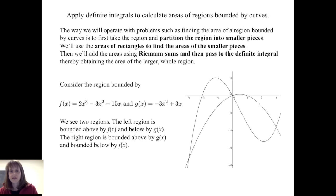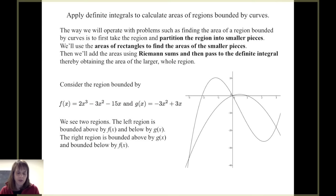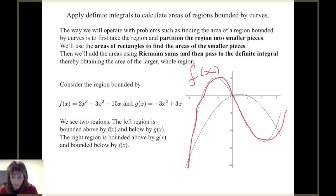Let's look at an example. Consider the region bounded by the curves f of x equals 2x cubed minus 3x squared minus 15x, and g of x equals negative 3x squared plus 3x. In this particular graph, f of x is this cubic curve, and g of x is this parabola.